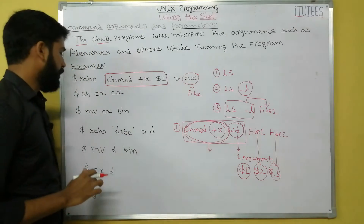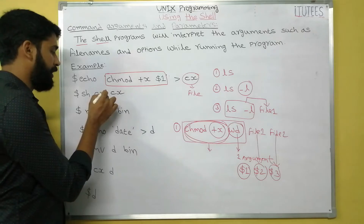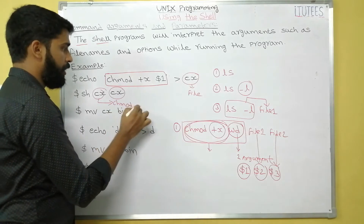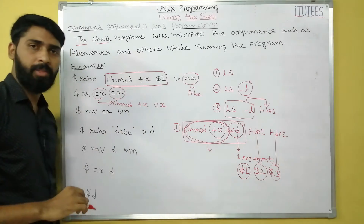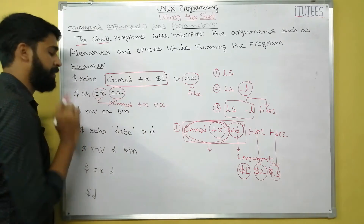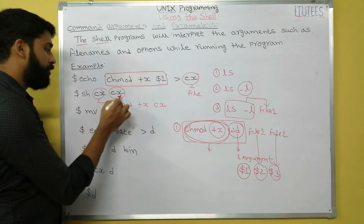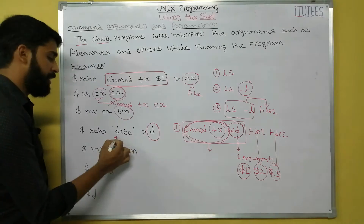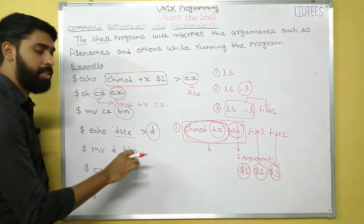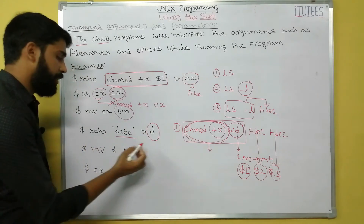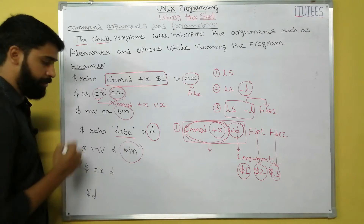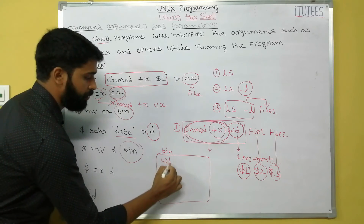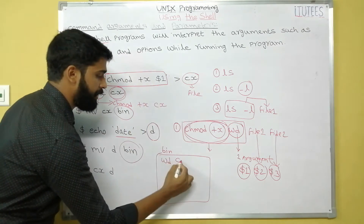Now I am going to change the permissions of cx itself. When I call cx, it runs chmod +x $1, which means cx — so chmod +x cx. Now I move this cx file to bin. I create another command named d. In d I store the date command, so when I press d it displays the current date. Similarly I move d to bin. So in bin we now have wd, cx, and d — three files available.